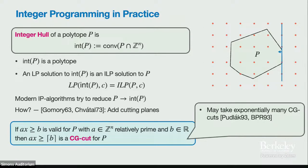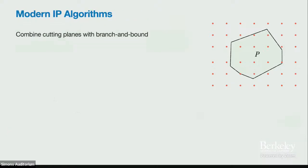Chvátal showed that if we add enough cutting planes, we will eventually converge to the integer hull — this procedure is complete. However, it may take a very long time, as shown originally by Pudlák and Benej-Potassim-Ras for a restricted case. Another downside is that it's numerically unstable and requires complicated heuristics to implement.